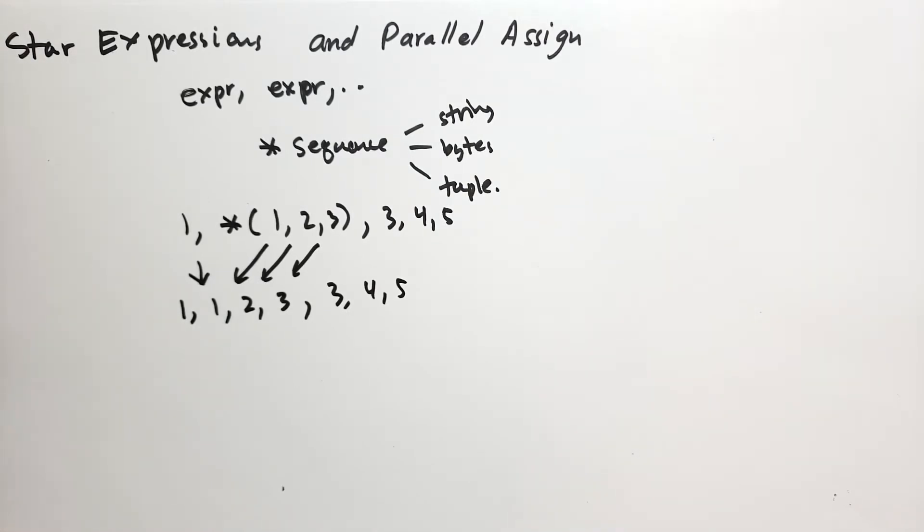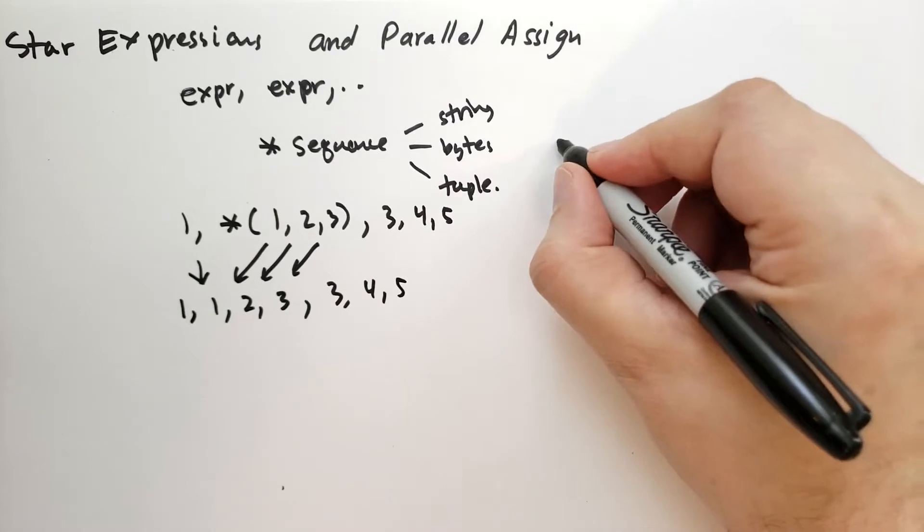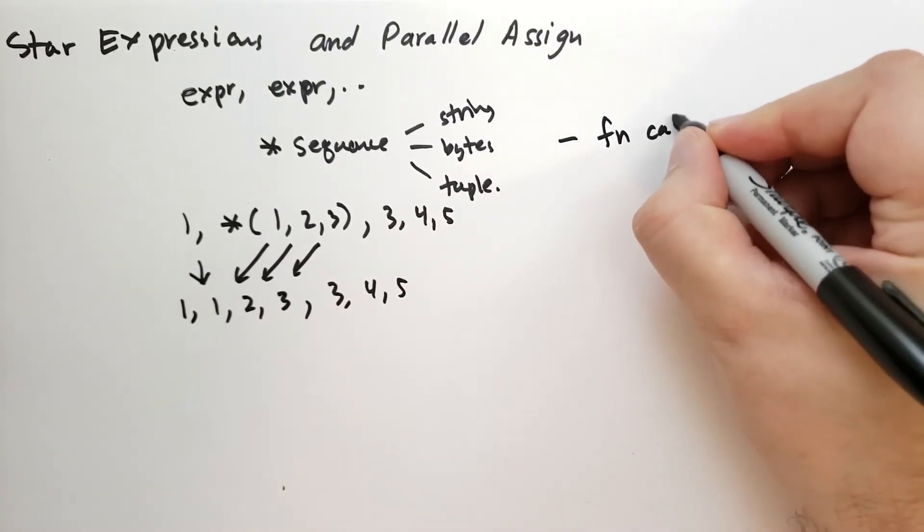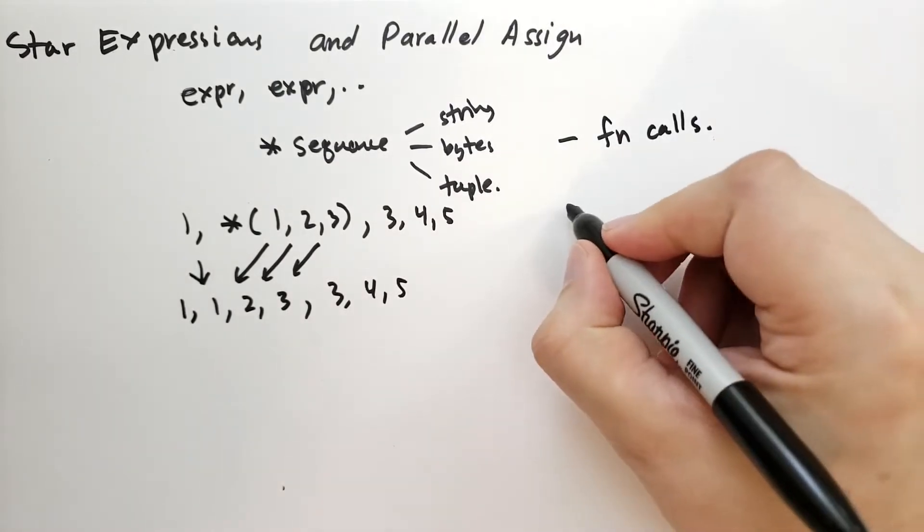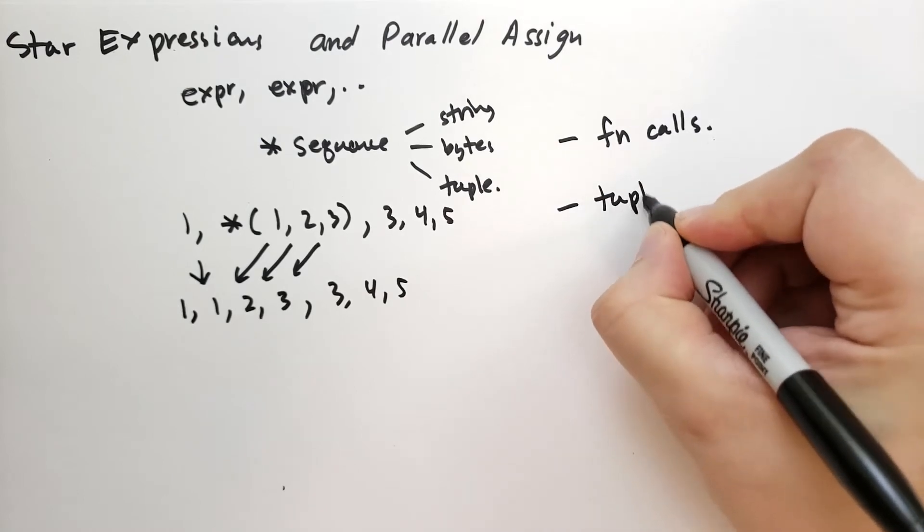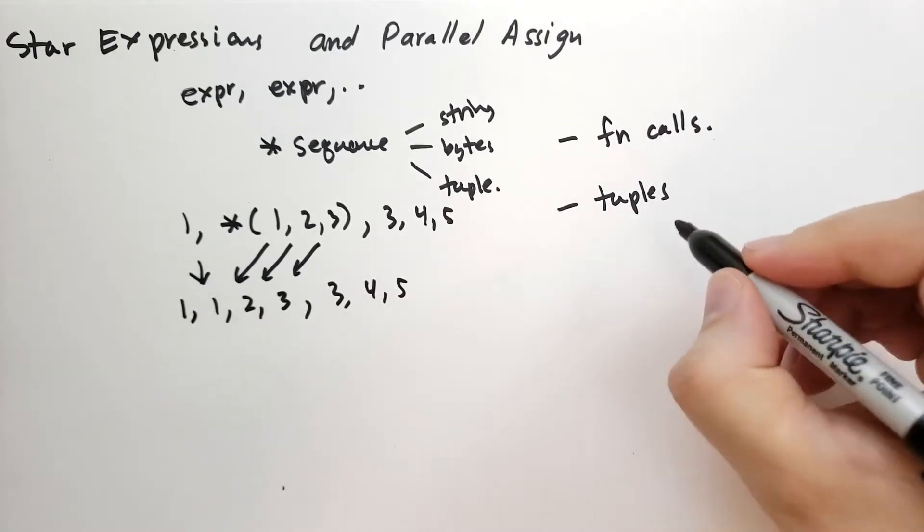Where can you include these? Well, typically you can include them in function calls. You can include them when you're creating tuples. This can be with or without the parentheses.